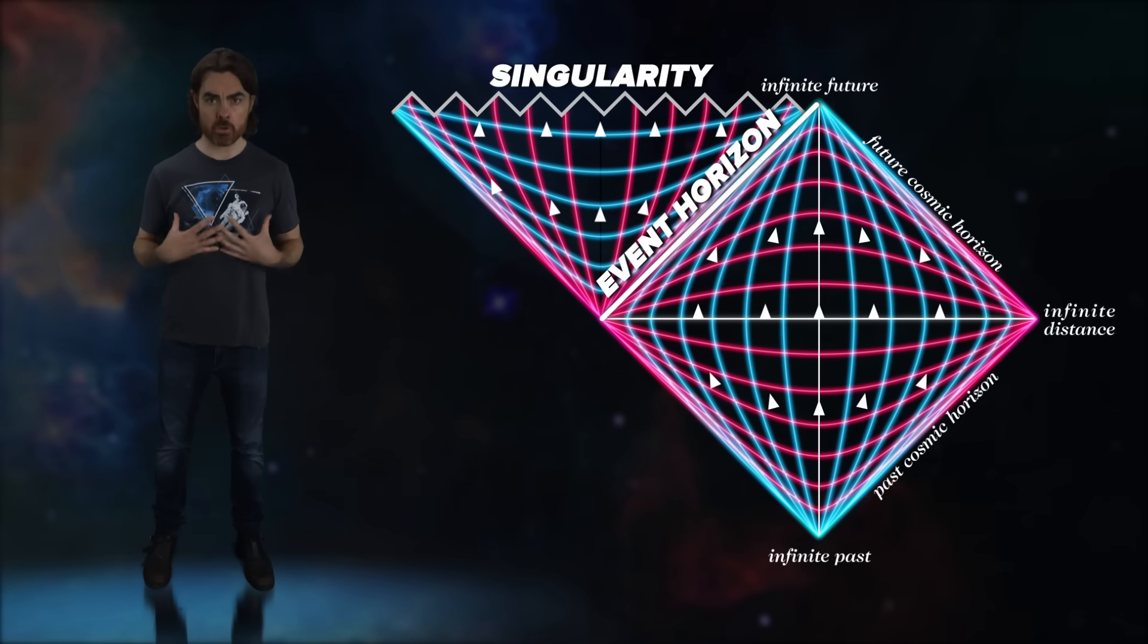The once vertical contours of space are now time-like and flow inexorably towards the future singularity. These two regions, our universe and the black hole interior, are just the Schwarzschild metric mapped out using Penrose coordinates. But our map isn't complete.